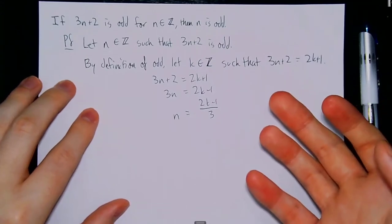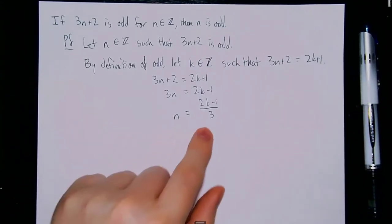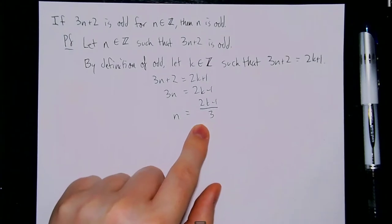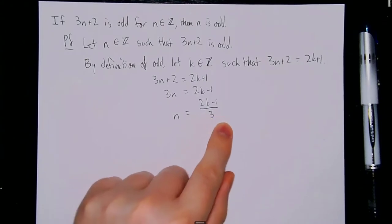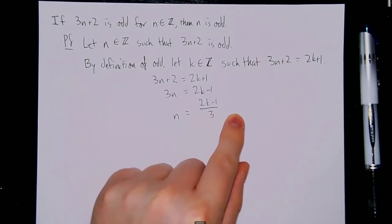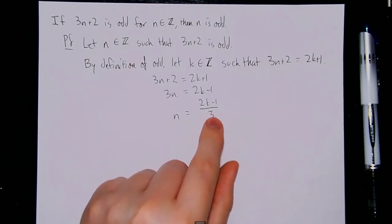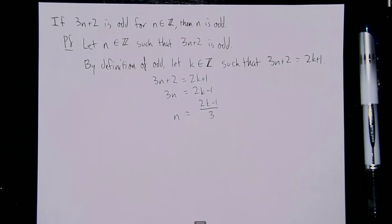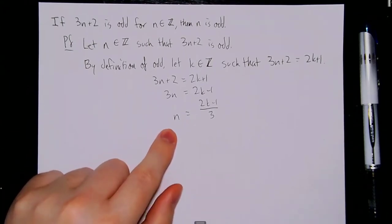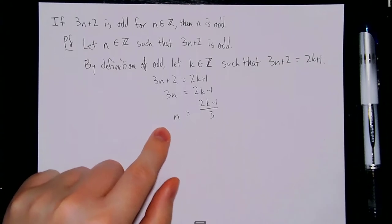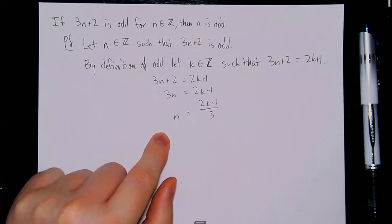Here's the problem: we don't know if 2k minus 1 divided by 3, just from the information we have, is an integer. So we can't make any claims that 2k minus 1 divided by 3 is in fact an integer, or that 2k minus 1 is divisible by 3 at all. Because there's no guarantee for n to be an integer, there's no way we can even try to figure out that n is odd. So we have to approach this problem a little bit differently.